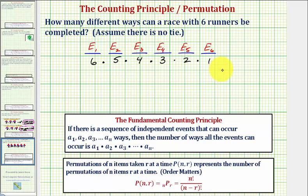Using the counting principle, this product tells us how many different ways the six runners can complete the race. Six times five times four times three times two times one, which is also six factorial, equals 720. This means there are 720 different ways a race with six runners can be completed, assuming there is no tie.